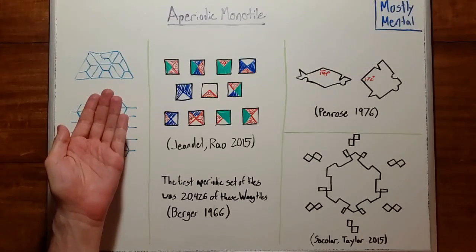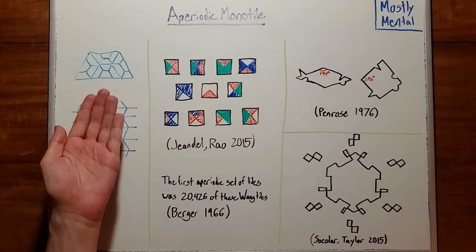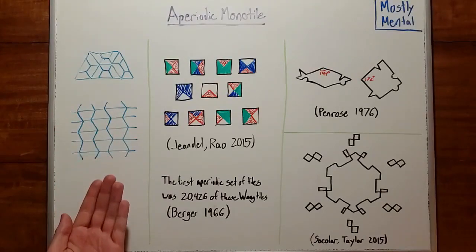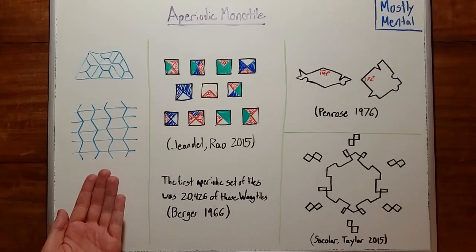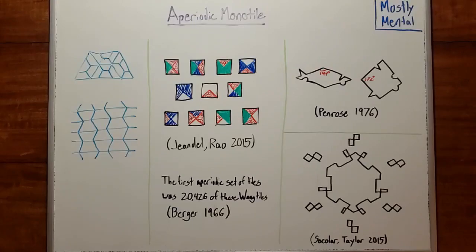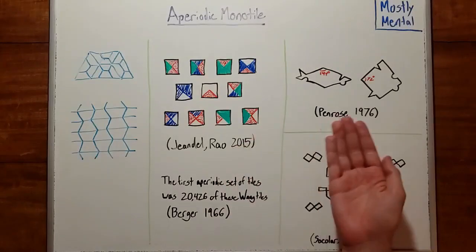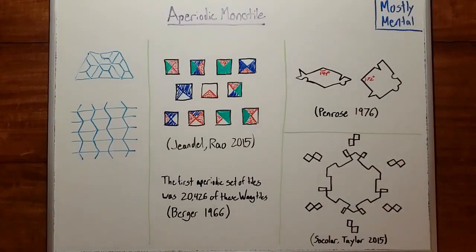These tiles we just saw allow for an aperiodic tiling, but they also have periodic tilings like so. A natural question is whether there are tiles that can only tile aperiodically. And it turns out there are. Here are a couple sets of tiles that only admit aperiodic tilings. There are already lots of great videos about both of these, I'll link something below, so I won't go into the proofs here.